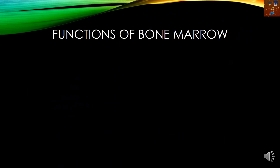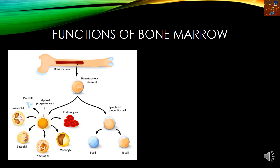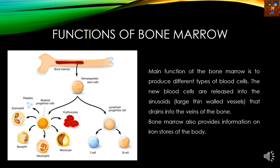Now, the functions of the bone marrow. The main function of the bone marrow is to produce different types of blood cells. From the red bone marrow come the hematopoietic stem cells, which are the mother cells of all other blood cells. The hematopoietic stem cells are further divided into myeloid progenitor cells, which give rise to platelets, eosinophils, basophils, neutrophils, monocytes, and erythrocytes; and lymphoid progenitor cells, which give rise to T cells and B cells. Another function is to provide information about the iron stores of our body — how much iron is present — which helps in producing hemoglobin.